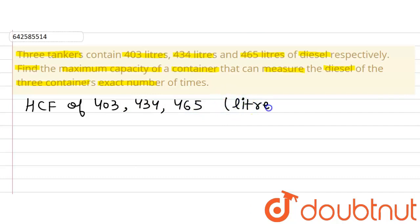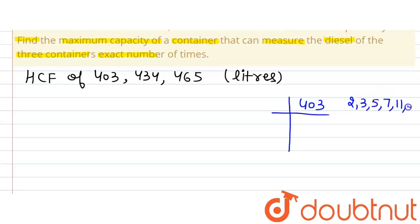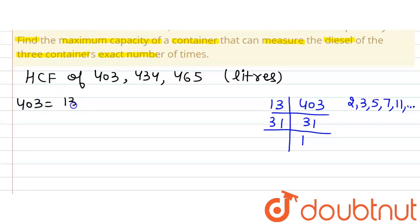We are going to find out the HCF of 403, 434, and 465 liters. First, let's write 403 as a product of its prime factors. We keep dividing by prime numbers — 2, 3, 5, 7, 11 — until we get 1. 403 is not divisible by 2 or 3, but it is divisible by 13, giving us 31. Since 31 is a prime number, 403 = 13 × 31.